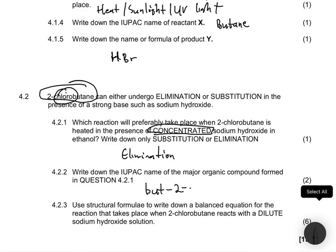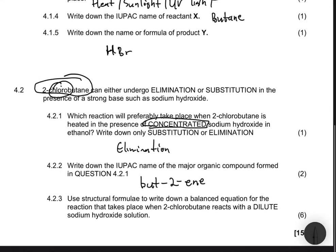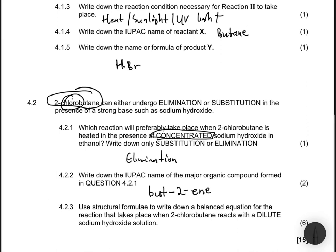4.2.3 says use the structural formula to write down a balanced equation for the reaction that takes place when 2-chlorobutane reacts with a dilute sodium hydroxide solution. Now we're using a dilute base, and I've said that if we use a dilute base, we go under substitution. If you use a concentrated base, we go under elimination.